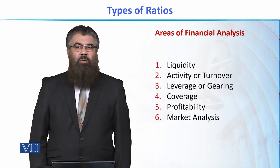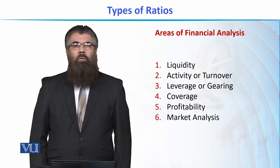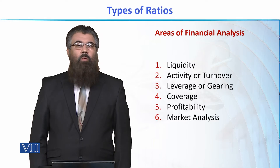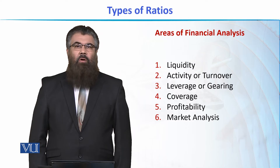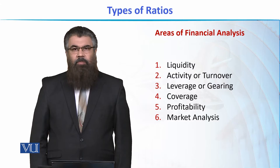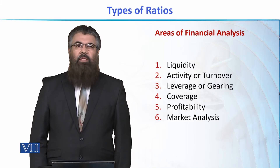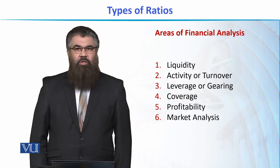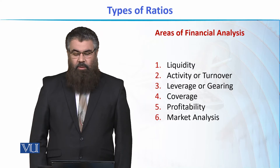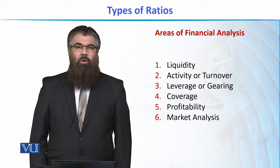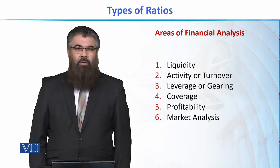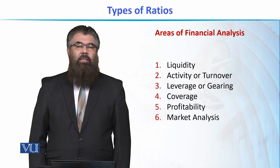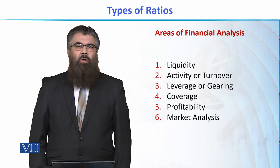These are the areas of importance, and there are different groups of people who are somehow related to a business organization — attached to it — who want to know about its strengths and weaknesses. The areas of analysis for which we will discuss various ratios are: liquidity, turnover or activity, leverage or gearing, coverage, profitability, and market analysis.